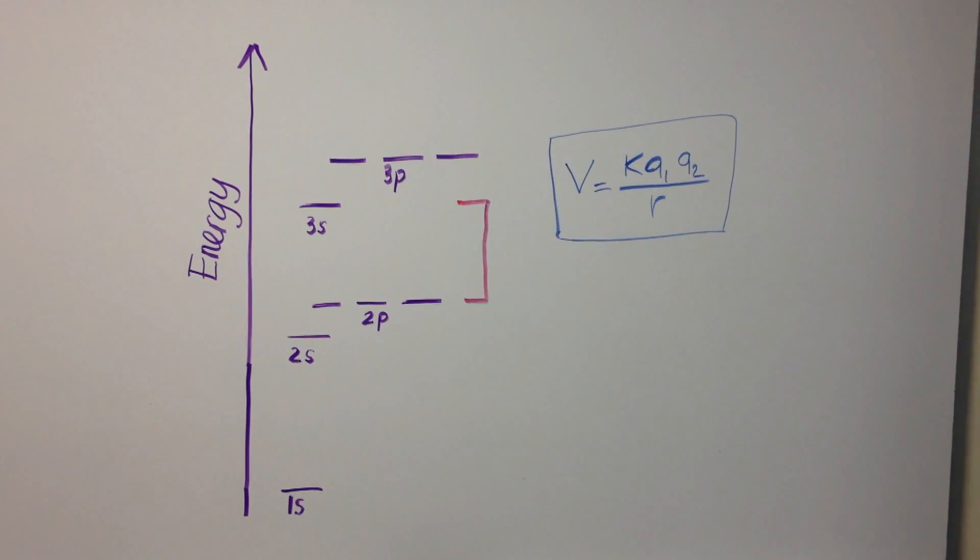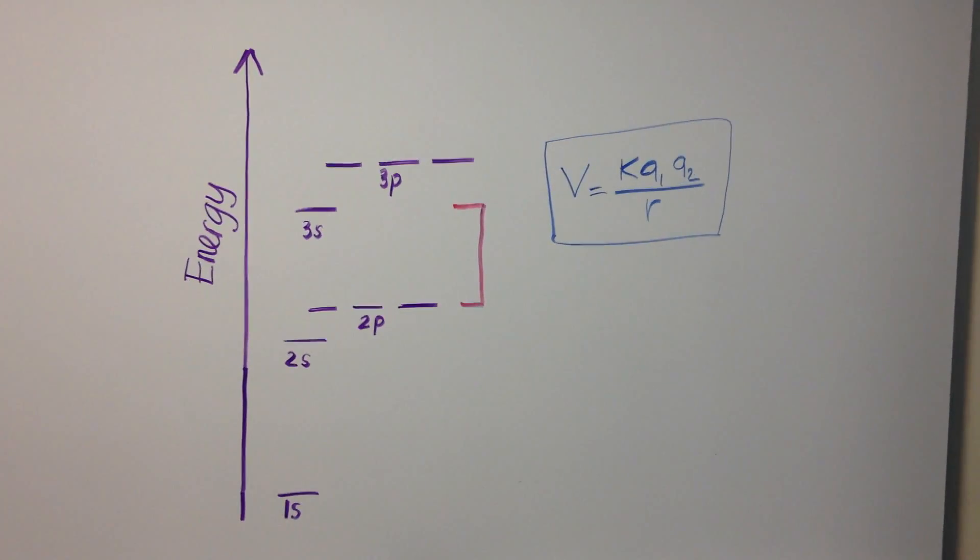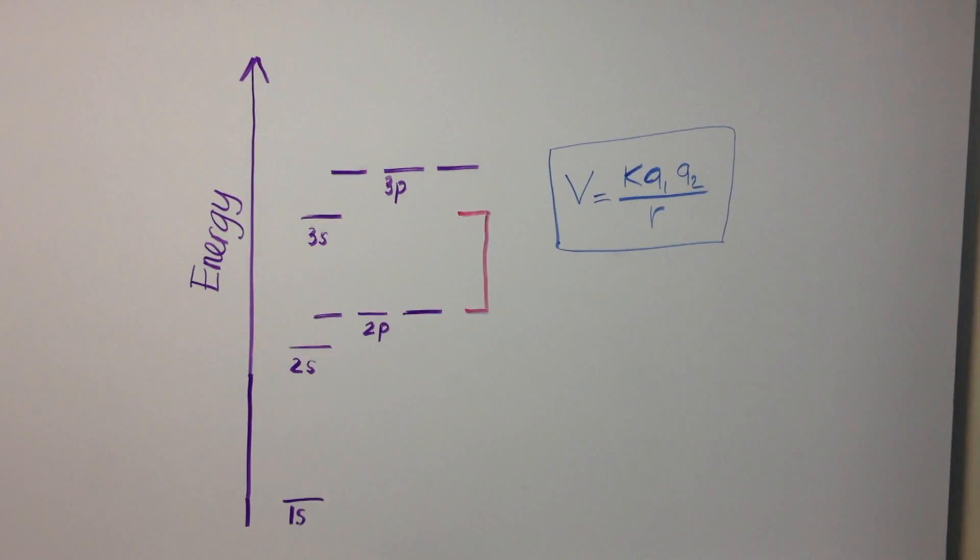Therefore, once an atom has bound to other atoms such that its valence p orbitals are completely filled, it is highly unfavorable to gain another electron.